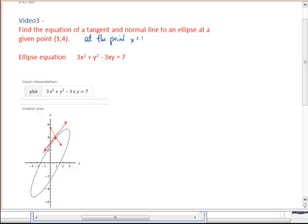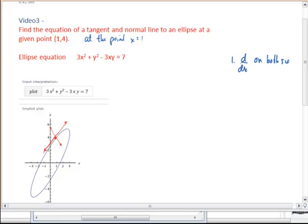Remember the steps for implicit differentiation. We first use the d/dx operator on both sides of the equation. We then separate any y-prime term and then we solve for y-prime. And then if we have to, in this case we do, we write our equations of tangency and normalcy using the points given.